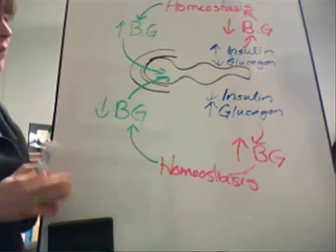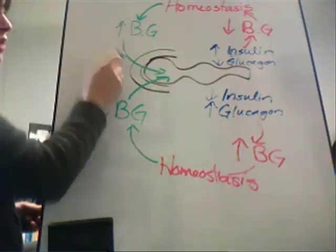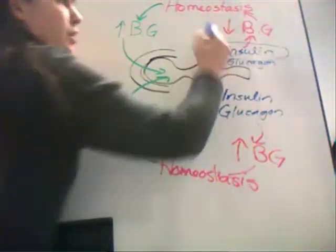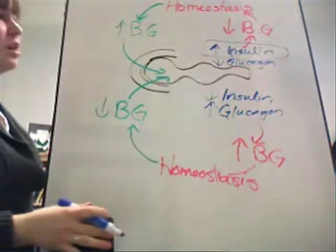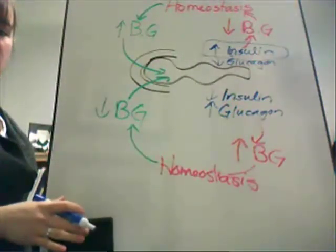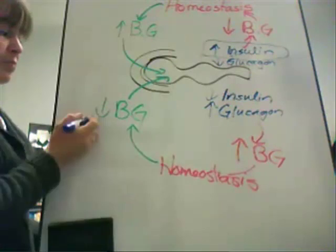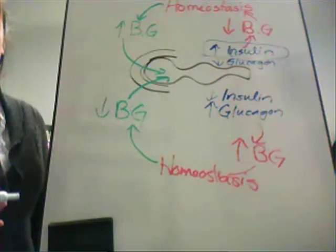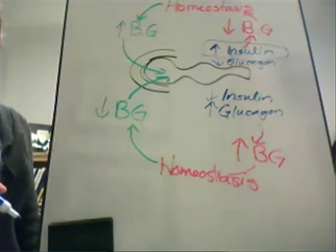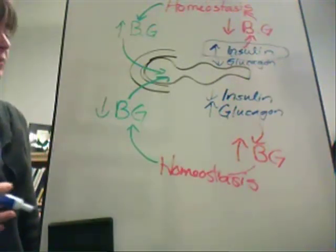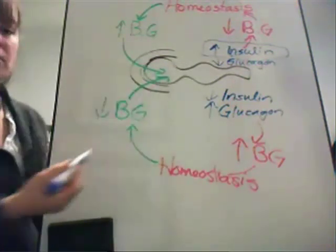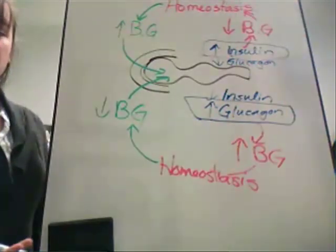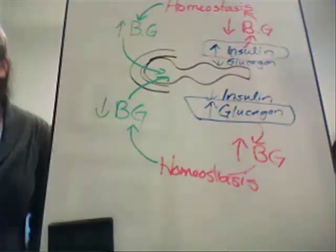We've got basically a figure-eight shape here. Any time blood glucose levels are elevated, this triggers the pancreas to primarily produce insulin and decrease glucagon secretion to regulate blood glucose back to homeostatic normals. If blood glucose levels fall too low — for example, if somebody had too much insulin released or gave themselves a dose of insulin — the pancreas kicks up production of glucagon from the alpha cells to elevate blood glucose levels back to normal.